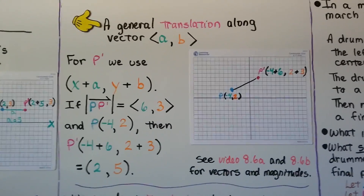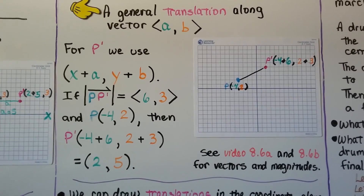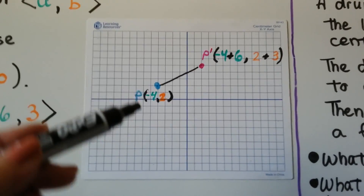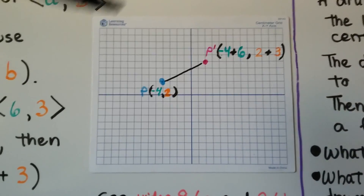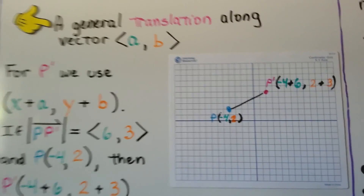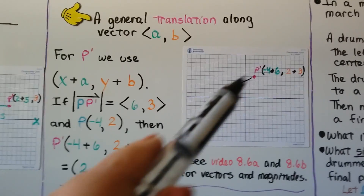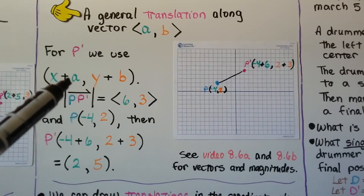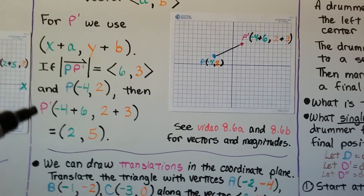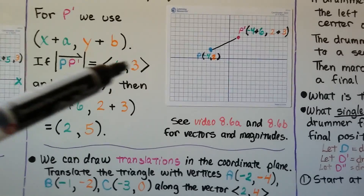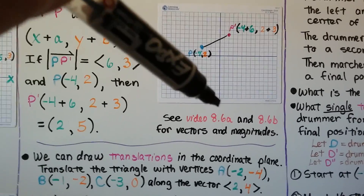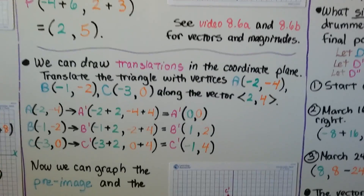A general translation is along vector <a, b> — there will be both a horizontal and vertical change, so there are values for both a and b. Looking at this diagram, the vector goes on a slant. Our pre-image P is at (-4, 2), and the vector magnitude is <6, 3>. P prime will be at (-4 + 6, 2 + 3), which is (2, 5). If you're confused about vectors and magnitudes, you need to watch 8.6a and 8.6b.